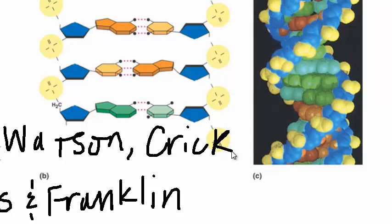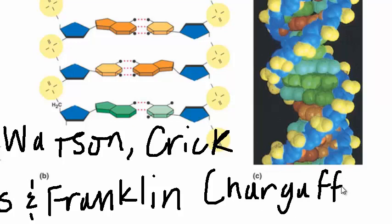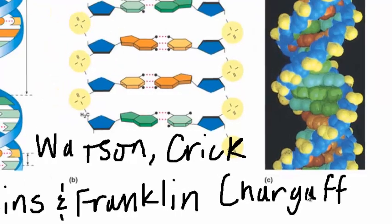There was also one other scientist, his name was Erwin Chargaff, who figured out some of the chemical components of DNA. So all these people working together - Wilkins, Franklin, Watson, Crick, and Chargaff - ended up coming together with what the structure of DNA must look like.